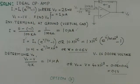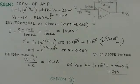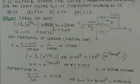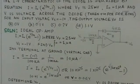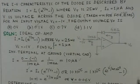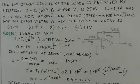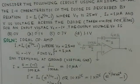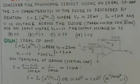This is a very good problem based on the logarithmic amplifier. Another similar problem will also be considered next, which will also have a diode in the feedback path. Thank you.